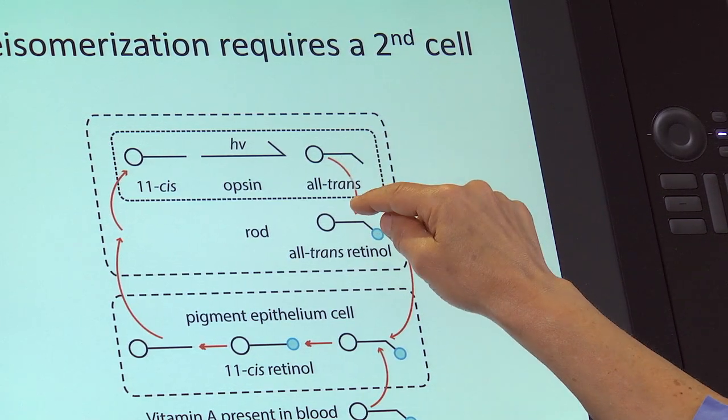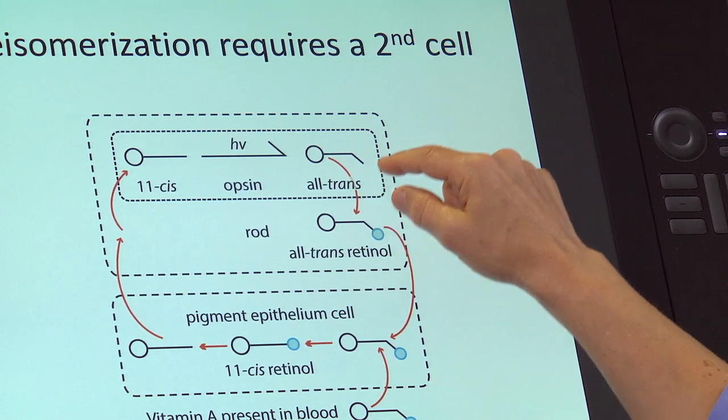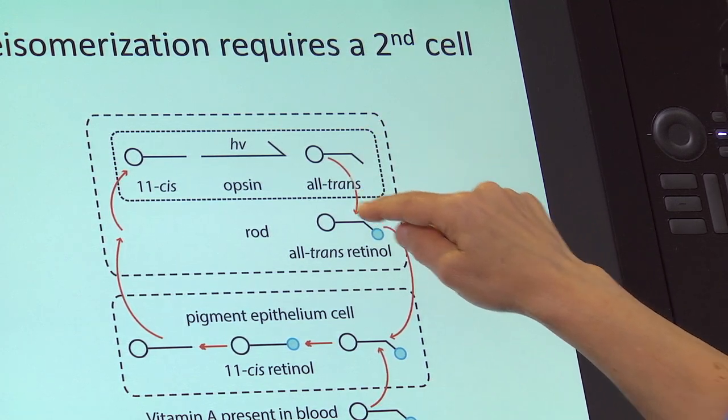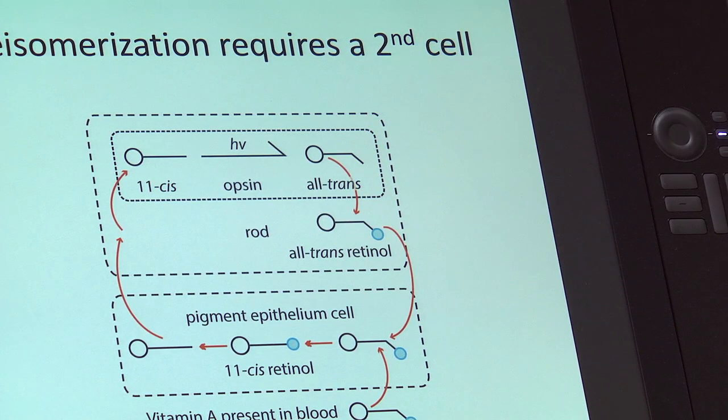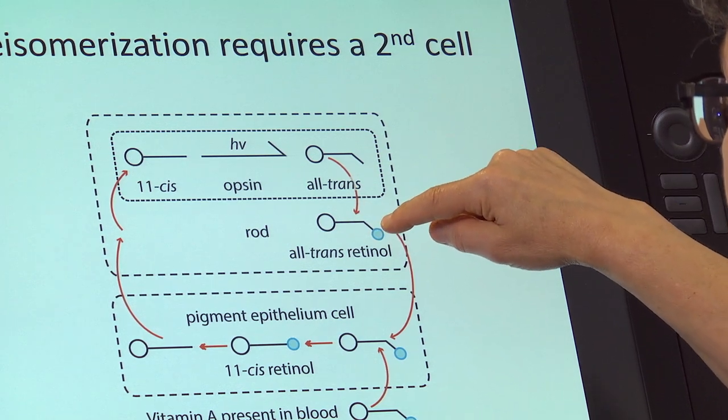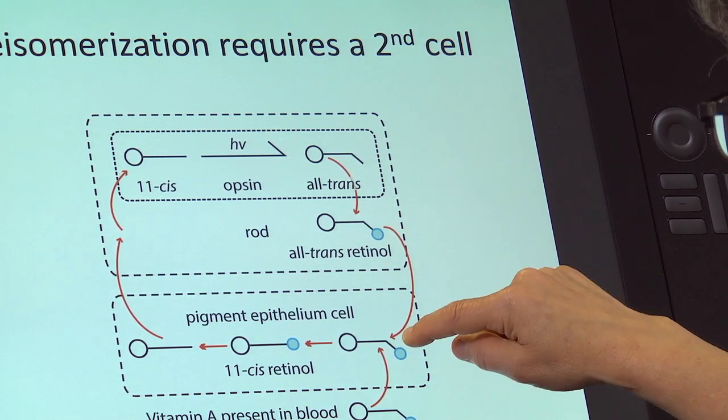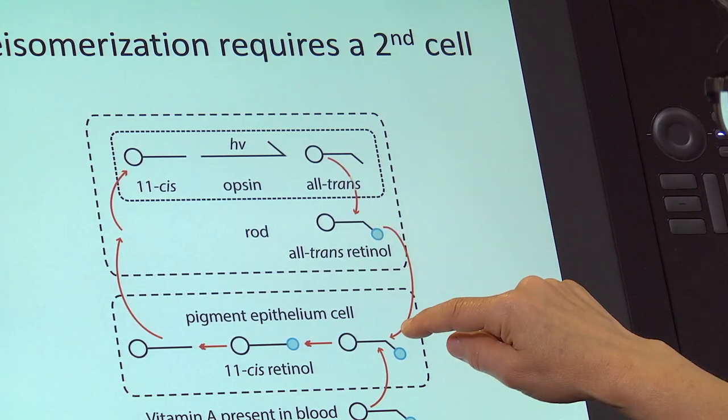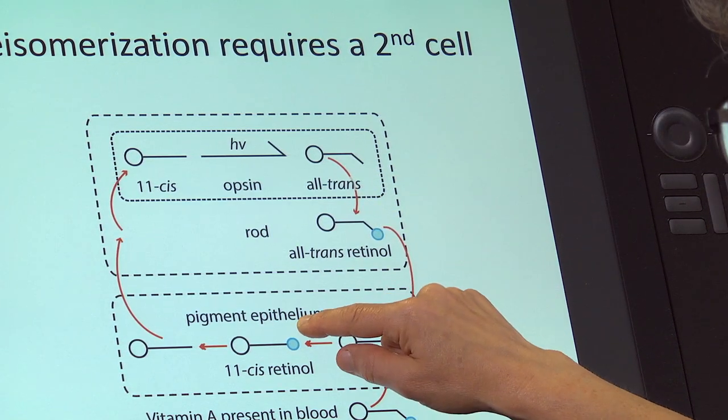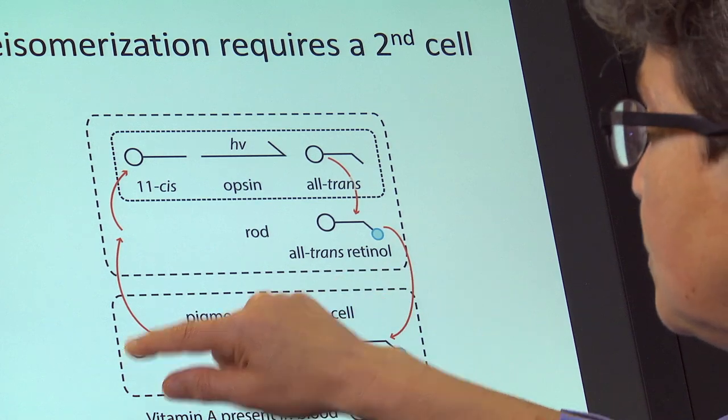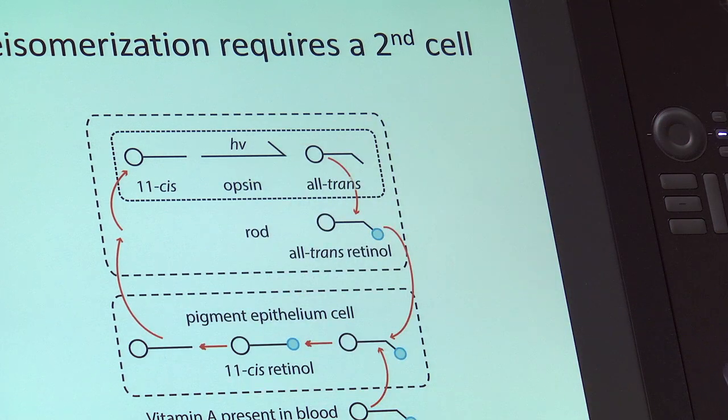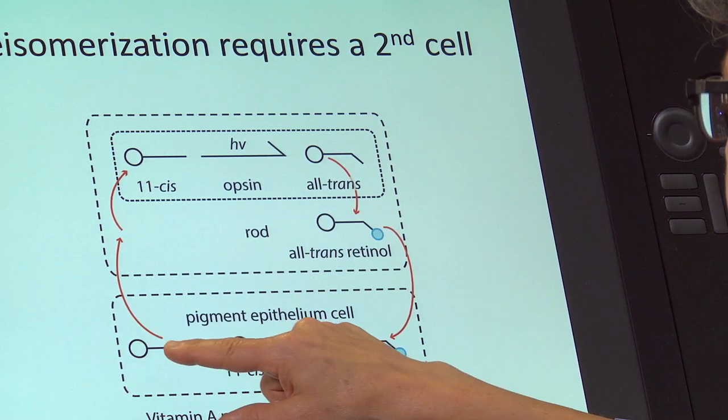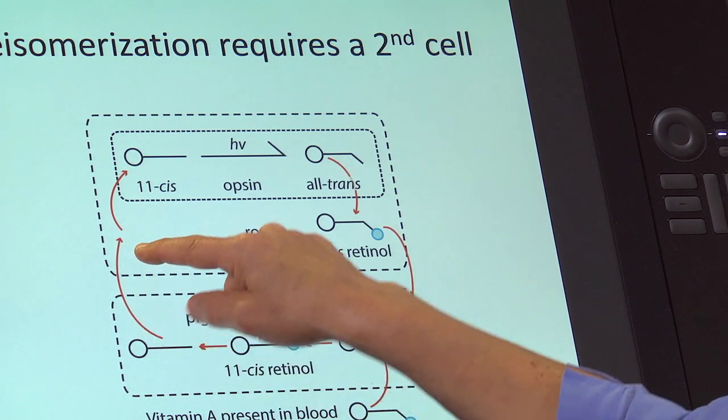This arrow is supported by a molecule. There has to be a molecule that's going to ship it out. And then—I'm sorry, it's shipped out of the rod. It's turned into 11-trans retinol, shipped out of the rod, taken into the pigment epithelium, where it goes through a series of enzymatic transformations before being shipped back to the rod.